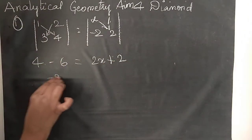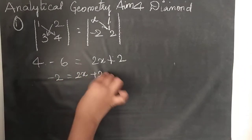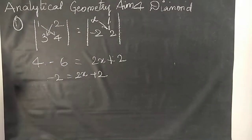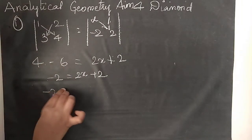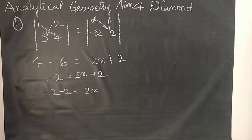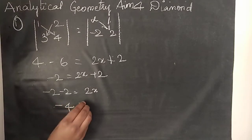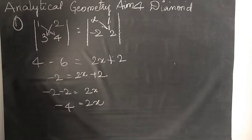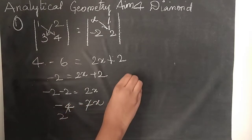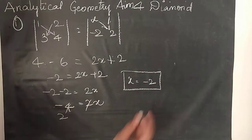Now 4 minus 6 is minus 2, equal to 2x plus 2. Then we send the plus 2 to LHS. Minus 2 minus 2 equals 2x. Minus 4 equals 2x. So x value is minus 2, which is option A.